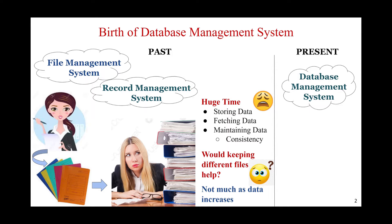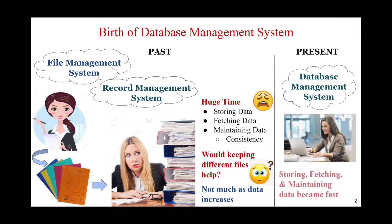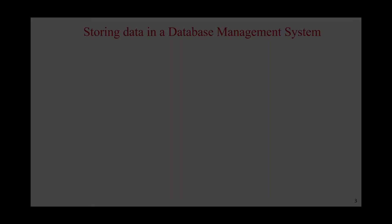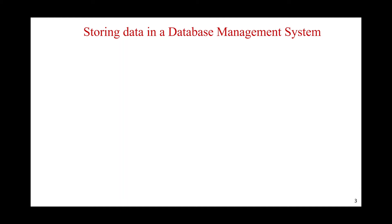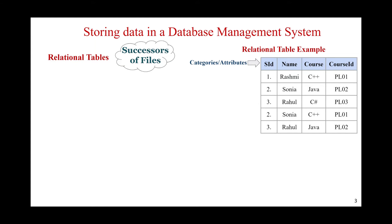The solution to all these problems was the database management system. A DBMS provides an easy and quick way to store, fetch, and maintain data. An important question then is: how do we store data in a DBMS? The answer is relational tables — analogous to the files we used before, but now we store records and information in the form of relational tables.